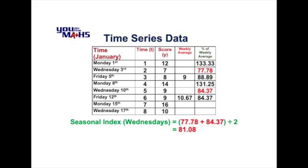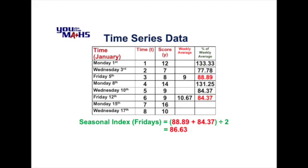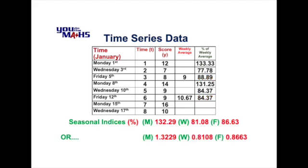For Wednesdays, the average of the two figures is 81.08%, meaning typically Wednesdays are 81.08% of the weekly average. For Fridays, the average comes to 86.63%, so typically Fridays are 86.63% of the weekly average. We call these figures seasonal indices, and they can also be expressed as ratios rather than percentages — so 1.3229, 0.8108 and 0.8663 for Monday, Wednesday and Friday respectively.